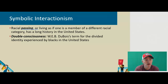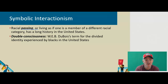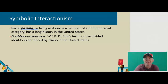Symbolic interactionism also deals with things like racial passing, or living as if one is a member of a different racial category. This has a long history in the United States. W.E.B. Du Bois termed this double consciousness for the divided identity experienced by blacks in the United States. A good example would be a light-skinned Hispanic who, for all practical purposes, looks white and passes for white.